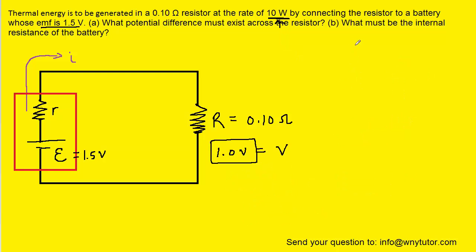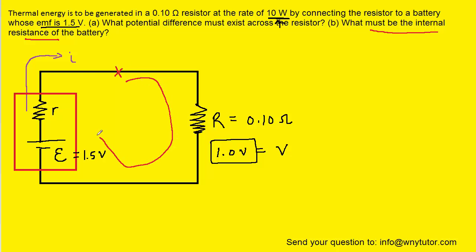Part B is asking us for the internal resistance of the battery, symbolized by the lowercase r. To do that, we can apply Kirchhoff's loop rule. In that rule, we pick an arbitrary starting point within the circuit and move our way around it, keeping track of the potential changes. So let's start at this point X and move around the circuit until we return to where we started.